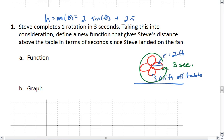This means that Steve's angular speed, omega, is 2π radians per second.